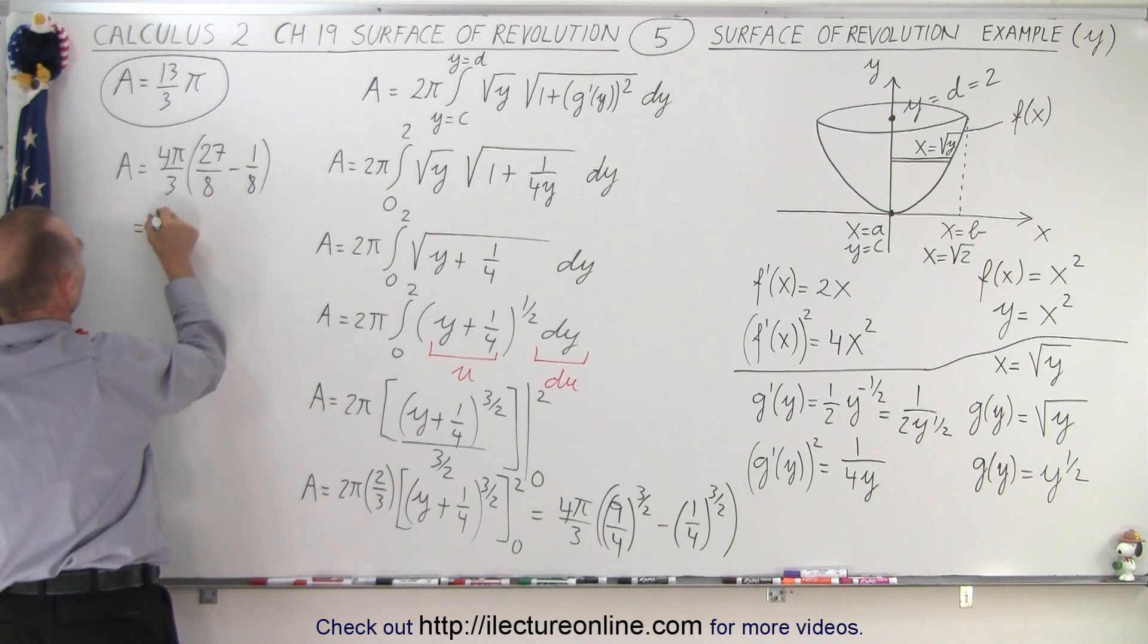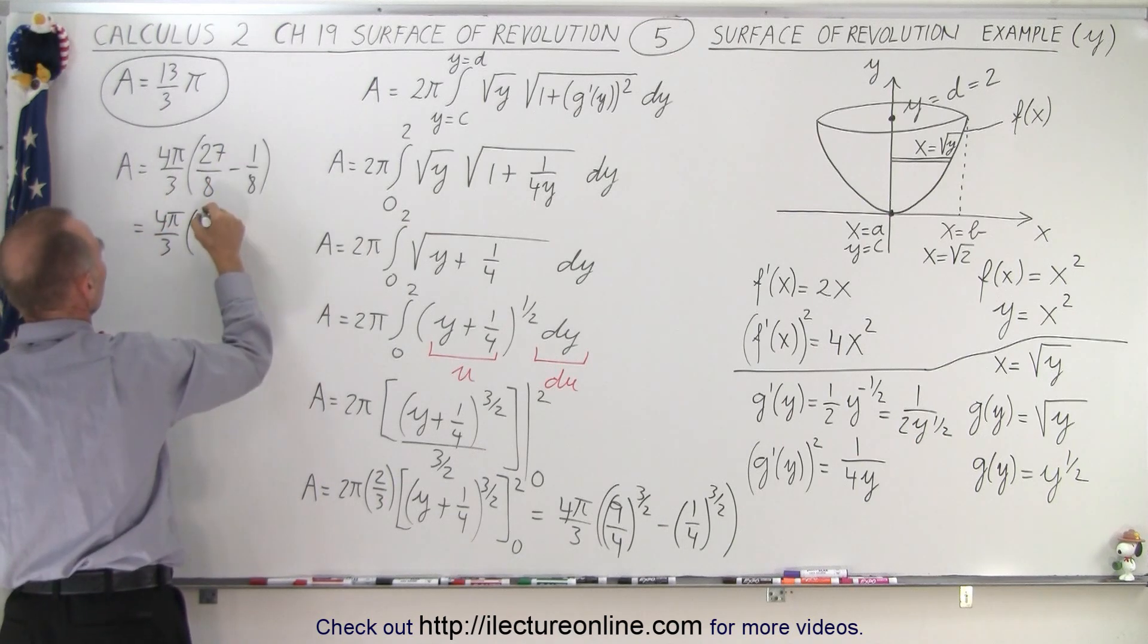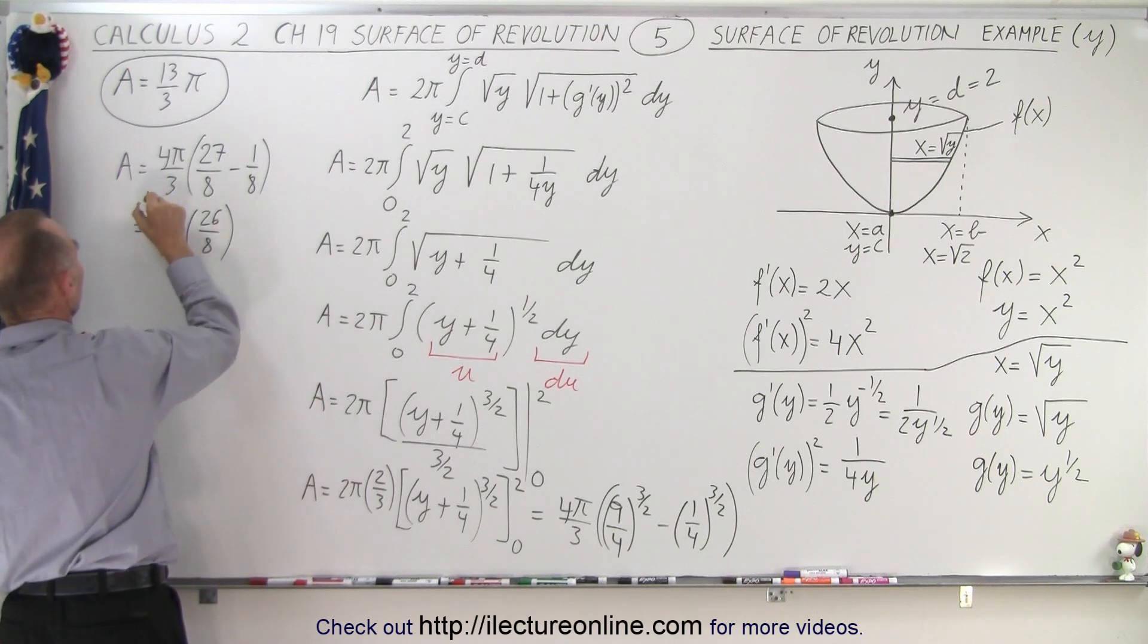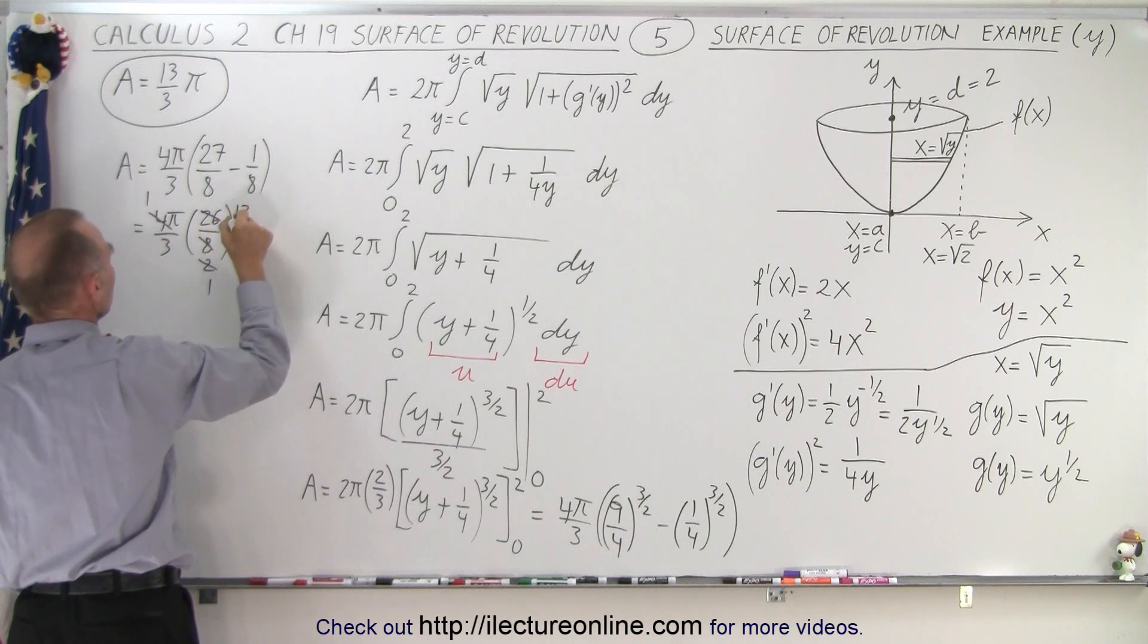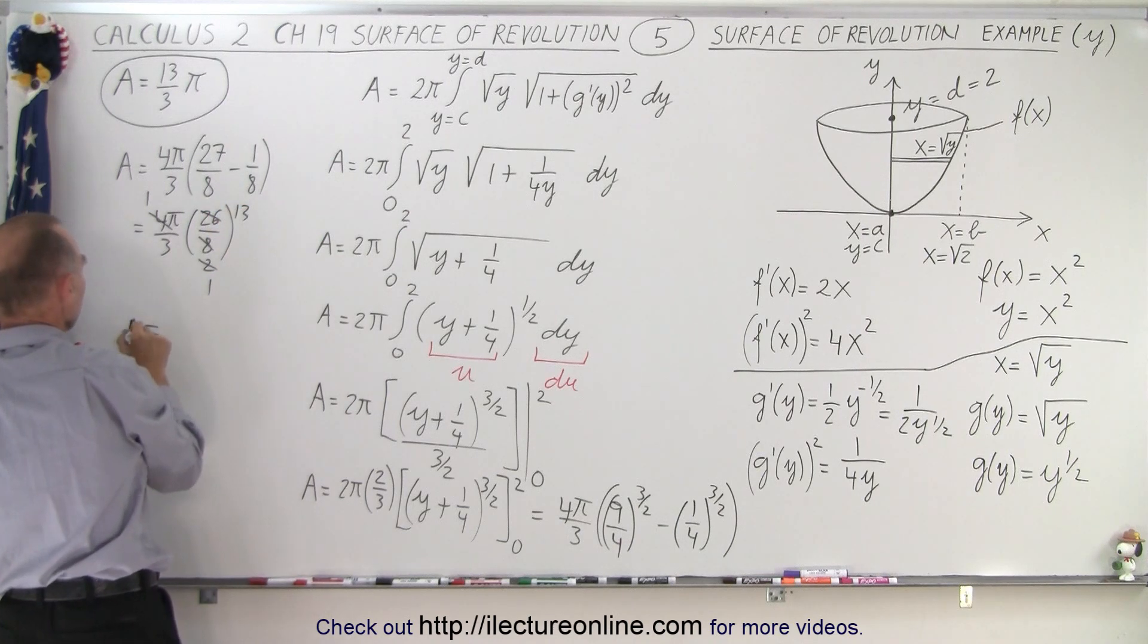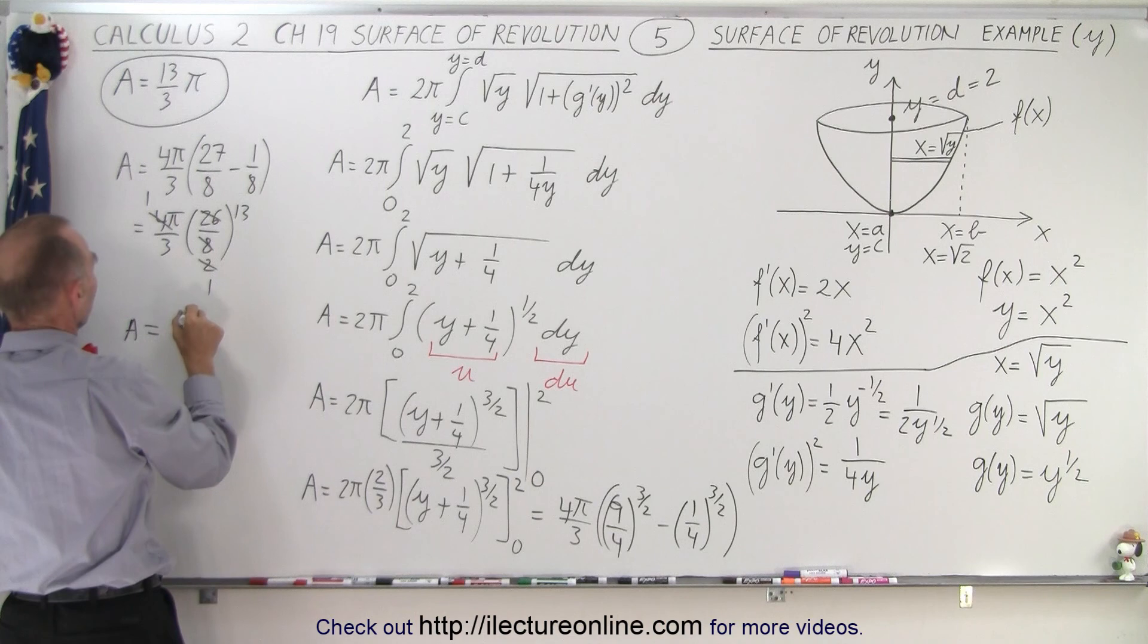Alright, when we simplify that, we get 4 pi over 3 times 27 minus 1, which is 26 over 8. And then we simplify some things, the 4 divided by 4 is 1, 8 divided by 4 is 2, 2 divided by 2 is 1, 26 divided by 2 is 13, and so we end up with the area equals 13 pi over 3.